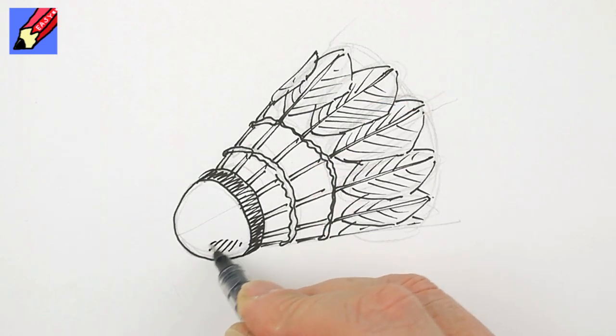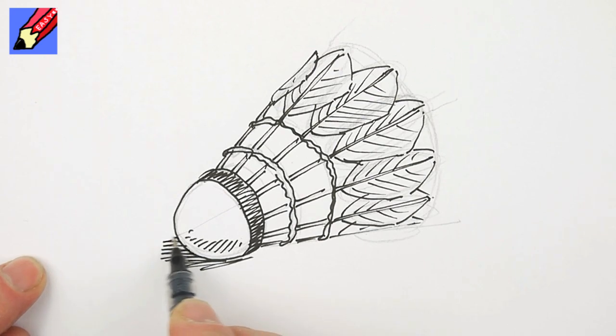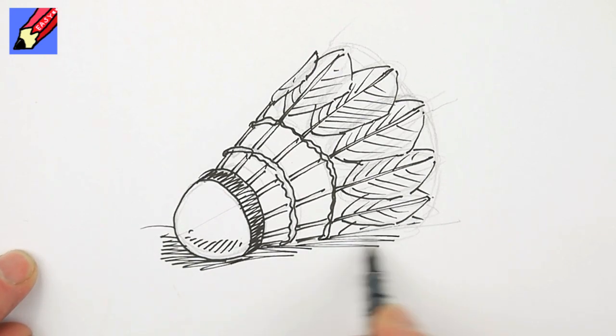There may be a little bit of shading around there and maybe a little bit of shading to kind of put it on the table, as I like to say. And there you are, how to draw a shuttlecock.